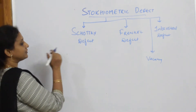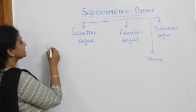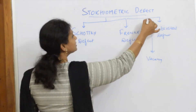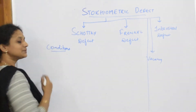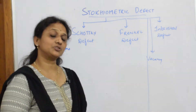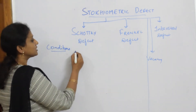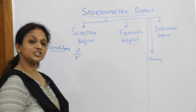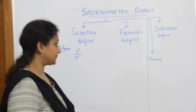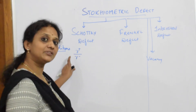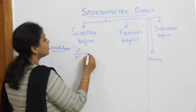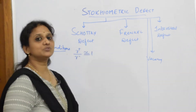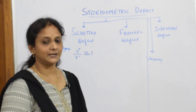When I speak about Schottky defect, let me write the subheading: conditions. In Schottky defect, the first important condition — I already told you about radius ratio, R+ by R−. If the radius of the cation and the radius of the anion is almost equal, approximately equal to one, such compounds will show Schottky defect.